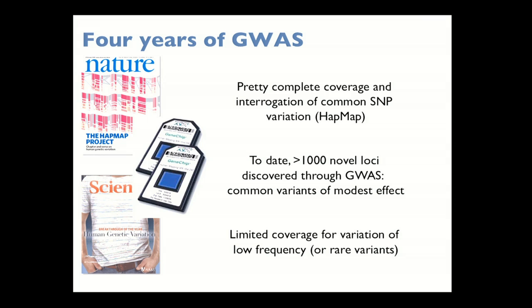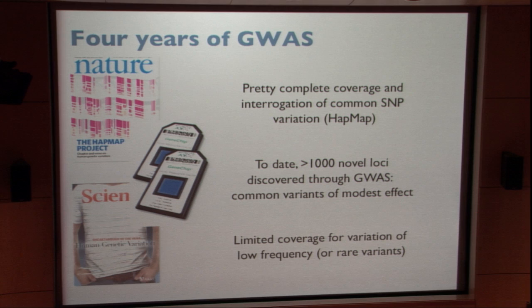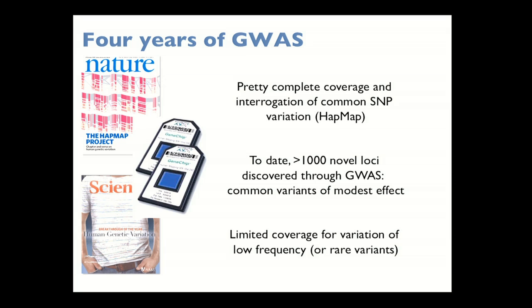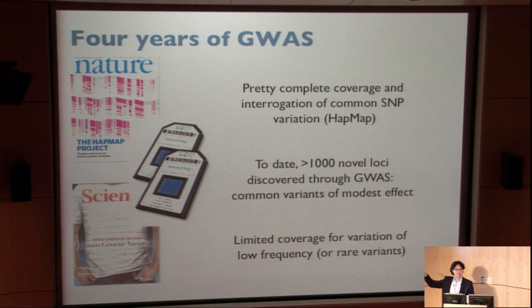This is a summary of the past four years for genome-wide association studies, starting with an international collaborative initiative known as the HapMap project. The International HapMap project documents exactly where common polymorphisms are in the human genome, and tells us something about the correlation structure of those polymorphisms. That has really led to the commercial development of genome-wide SNP genotyping arrays.